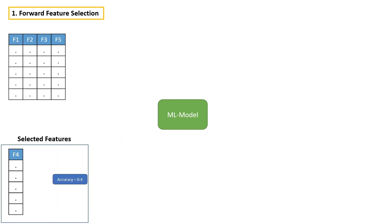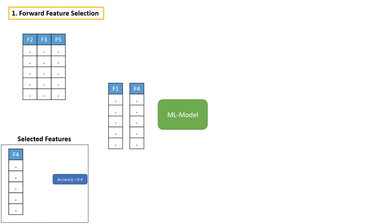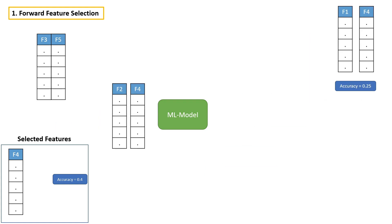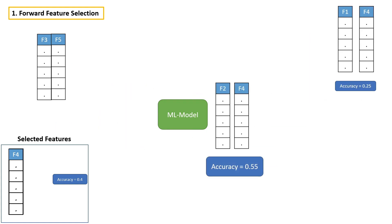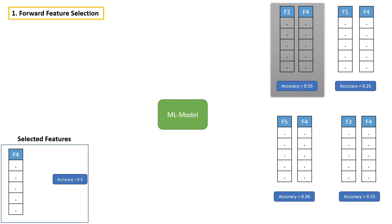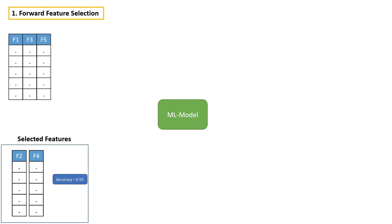Now we have to repeat the process again. This time take the first feature, combine it with feature four, then build a model and calculate accuracy. Likewise, take each and every feature, combine it with feature four, build a model, and calculate accuracy. After doing that, we have to select one feature which gives us the highest accuracy with feature four. In this case, combining feature two and four gives us the highest accuracy, so the second best feature is feature two. Let's add it to the selected feature list.